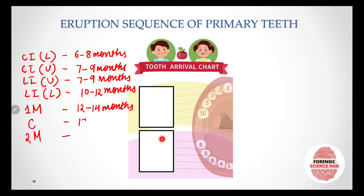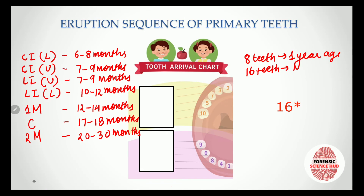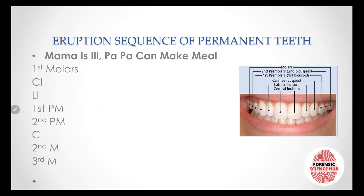The canines come between 17 to 18 months, and finally the second molar comes between 20 to 30 months. On average, a child is supposed to have eight teeth at the first year of age, 18 teeth at one and a half years of age, and 20 teeth at two to two and a half years of age.